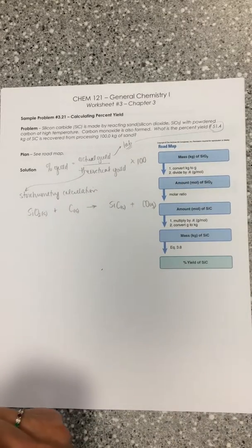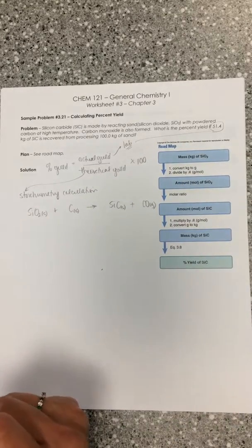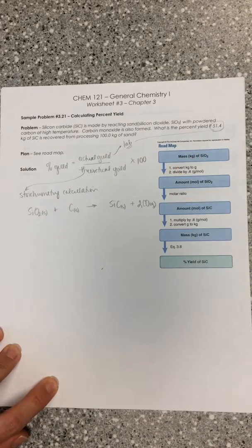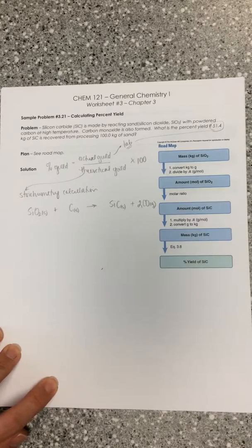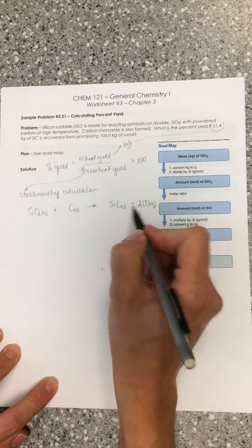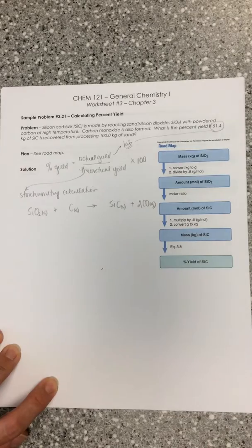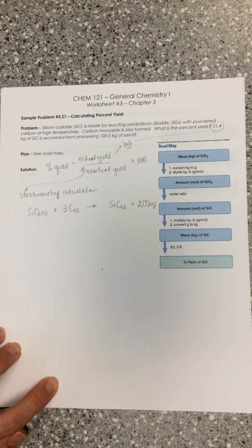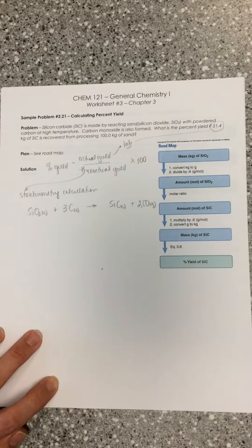We need to balance this chemical equation. We can see that we've got two oxygens over here, so I'm going to put a two in front of my carbon monoxide. And we can see that we've got two carbons here plus another carbon that's part of the silicon carbide, so that gives us a 3 here. So now we have a balanced chemical equation to answer the question.